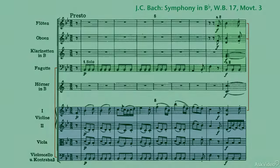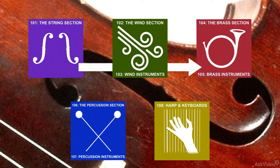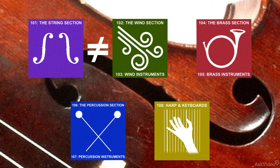It would be safe to say that the winds and strings bear the strongest bond of any two orchestral sections, and that the winds provide something of a gateway for the string section in relating to the brass. All the same, the winds are nothing like the strings in construction, technique, and individuality.